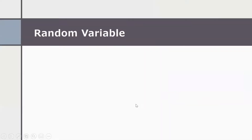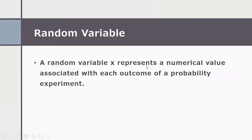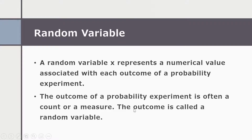Let's talk about random variables. A random variable X represents a number of values associated with each outcome of a probability experiment. A probability experiment is any procedure that can be infinitely repeated and has a well-defined set of possible outcomes known as the sample space. The outcome of a probability experiment is often a count or a measure, and this outcome is called a random variable.